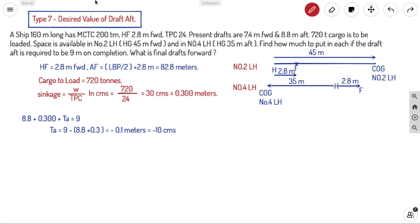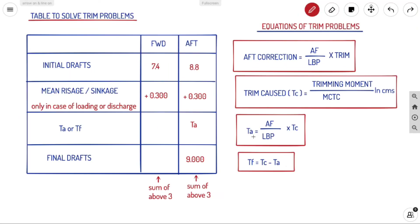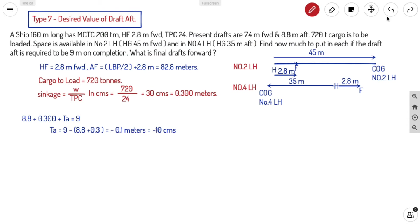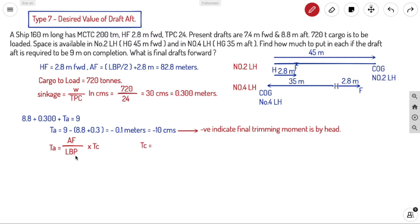Since ta is negative, that means the moment is in the opposite direction — the ship has a final trimming moment by the head. Now, from the equation ta equals (F / LBP) × tc, we can find tc: tc equals ta × LBP divided by AF. Substituting: ta is minus 10 cm, LBP is 160 meters, AF is 82.8 meters. The answer for tc is 19.324 centimeters, which is 0.193 meters.